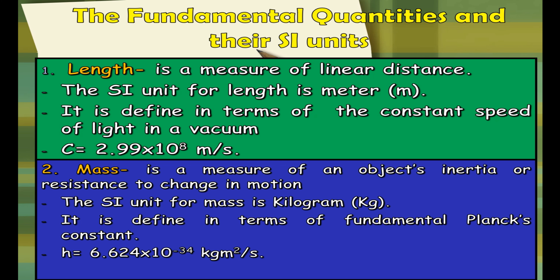Another SI unit of measurement is mass, which can be defined as an object's inertia or resistance to change in motion. Its SI unit is kilogram or kg. This is defined in terms of the fundamental Planck's constant h, which is 6.624 times 10 raised to negative 34 kilogram meters per second.